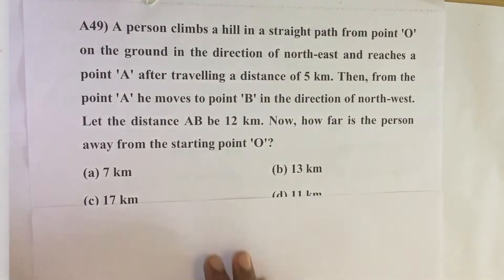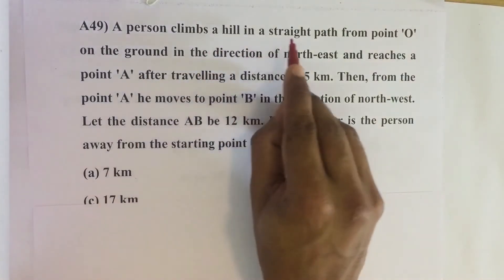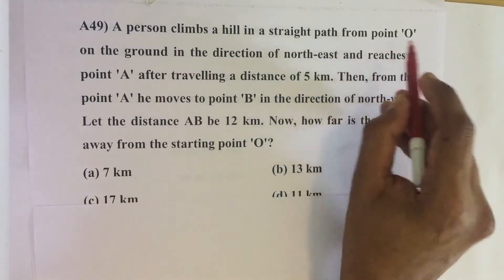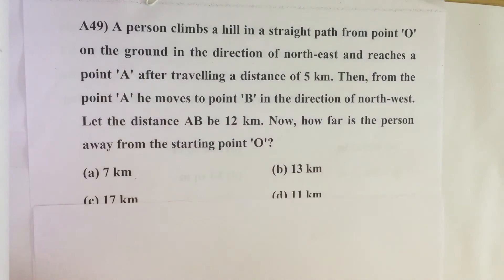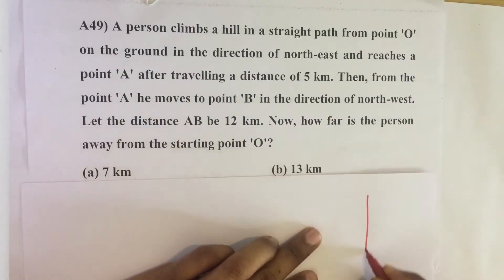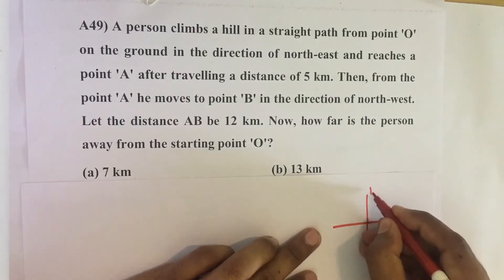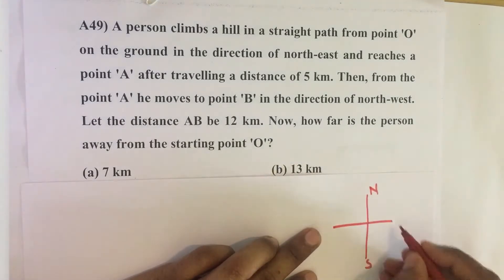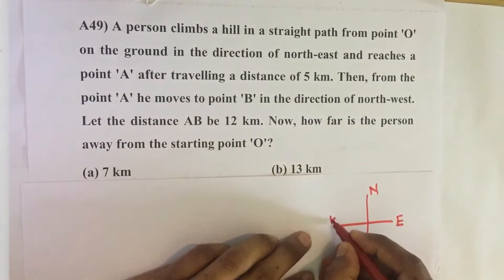So here, a person climbs a hill in a straight path from point O on the ground in the direction of northeast. So, north, south, east, west.